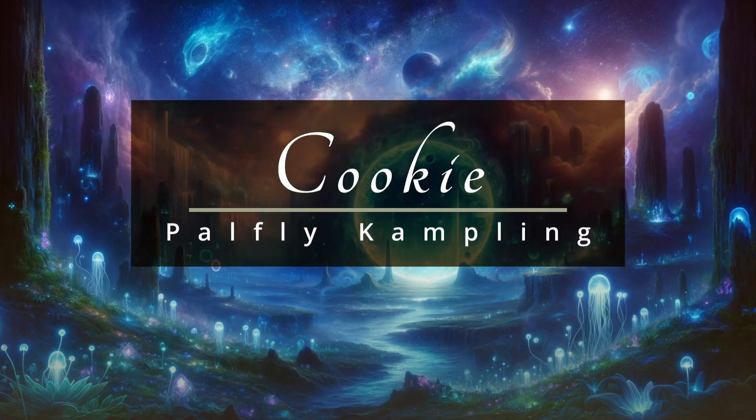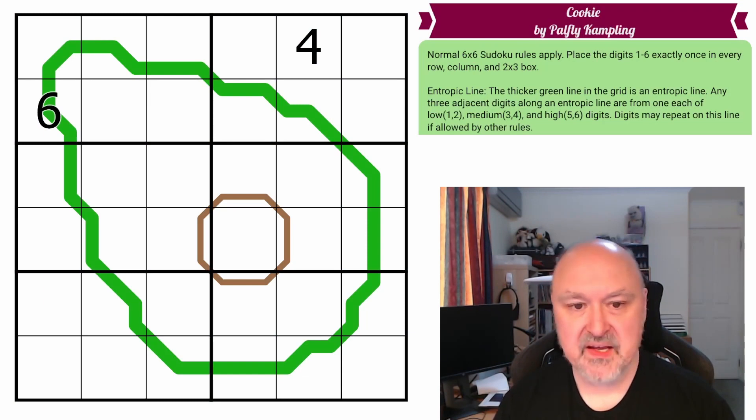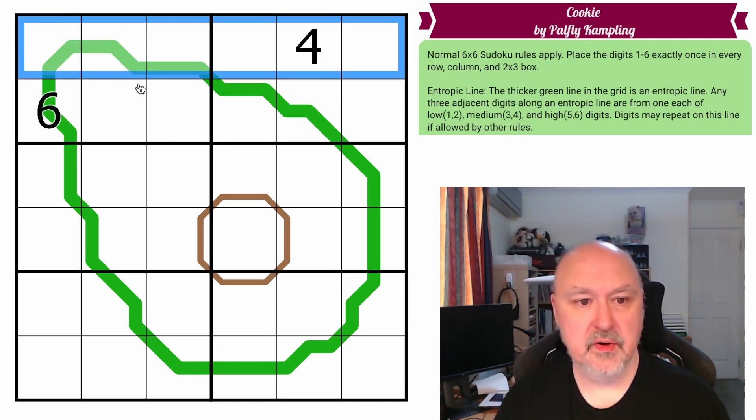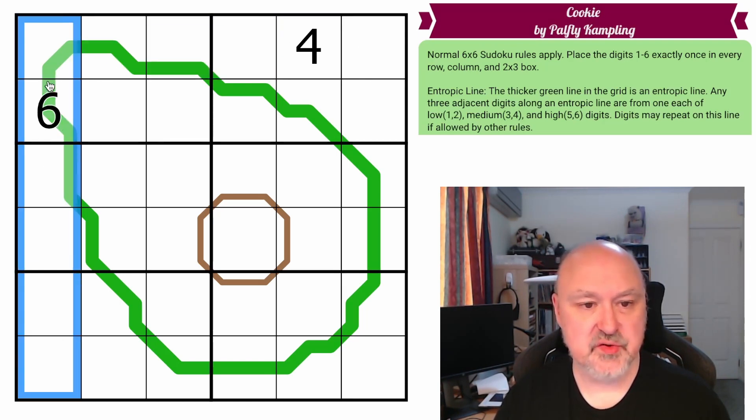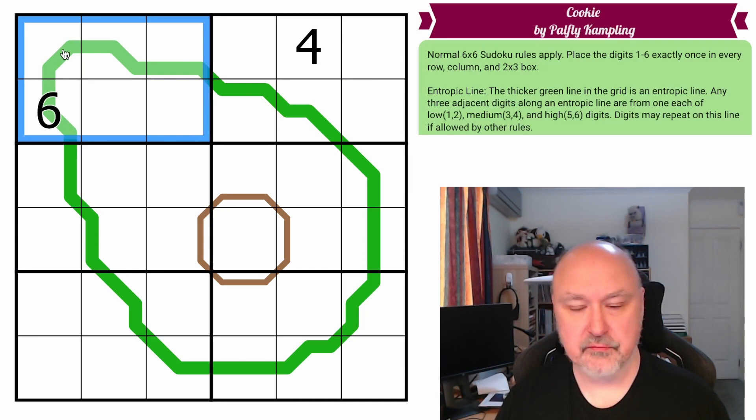Hello, let's continue our Sudoku adventure with the puzzle Cookie by Palfly Kampling. In this 6x6 Sudoku, we have to place the digits 1 through 6 into every row, into every column, and into every 2x3 box without repetition.